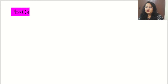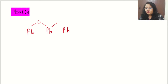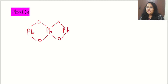We can also call it lead 2,4 oxide. When we talk about finding the oxidation number of lead in lead tetroxide, we need to understand that this is an exceptional case — remember this point. We always need to draw the structure of this compound so that we can calculate. First we will draw the structure: there are 3 lead atoms and 4 oxygen atoms.